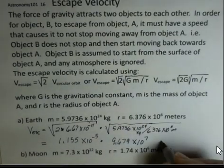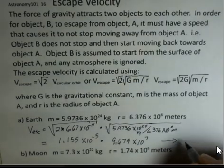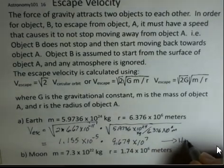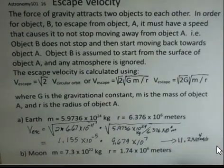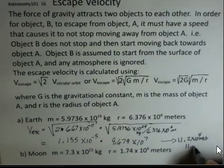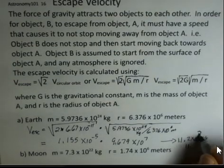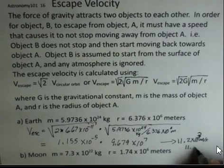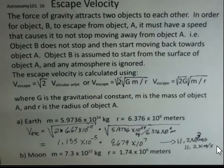We multiply those two together. For the Earth, I'm coming up with 11.2 times 10 to the 4th meters per second. Something is not right here. This is 10 to the 3rd, or 11.2 kilometers per second.